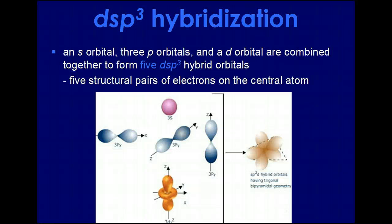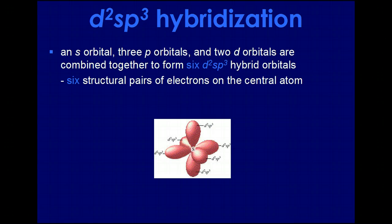When we get into dsp3 and d2sp3, we have atoms that can hold more than four pairs of electrons, violating the octet rule by going above four pairs. That's when a fifth orbital — d or d2 — comes into play, depending on how many areas of electrons are around the central atom. d2sp3 is only seen with molecules from an octahedral geometry, while dsp3 is only seen with molecules from a trigonal bipyramidal geometry.